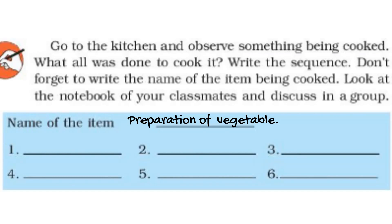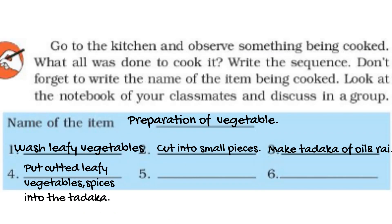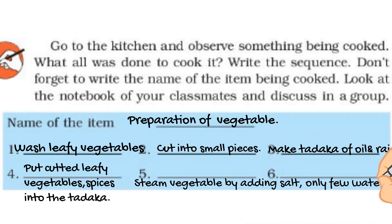Let's see how leafy vegetables are cooked. First, wash the leafy vegetables, then cut them into small pieces. Then make tadka — which is heating oil and adding rai and some spices — and add the cut leafy vegetables into that tadka. Sprinkle some water and cook it with salt according to taste. Remember, we always steam the vegetables; we don't boil leafy vegetables.